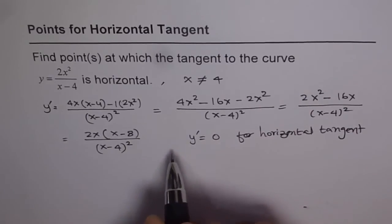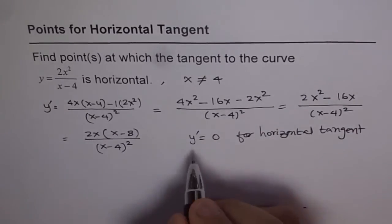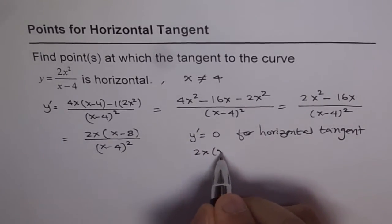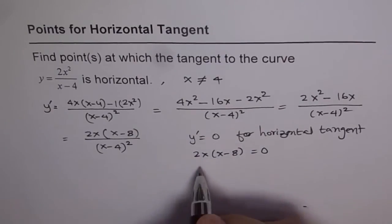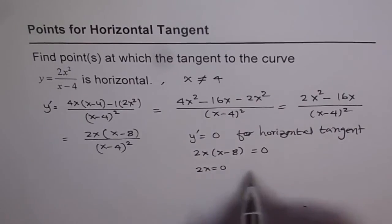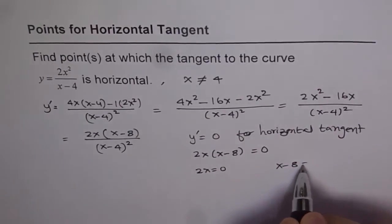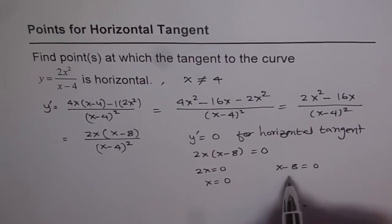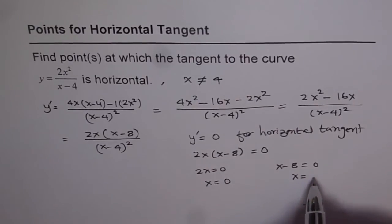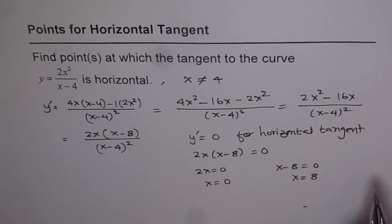Now, that can be 0 only if numerator is 0. That means 2x times x minus 8 equals to 0. If you solve for this, you get either 2x equals to 0 or x minus 8 equals to 0. 2x can be 0 at x equals to 0 and x minus 8 will be 0 at x equals to 8.